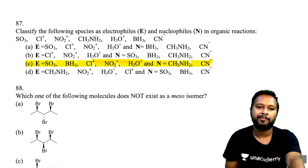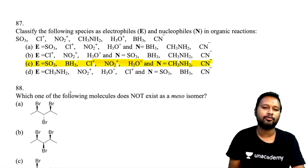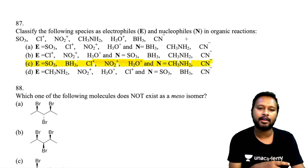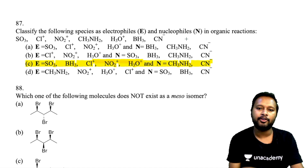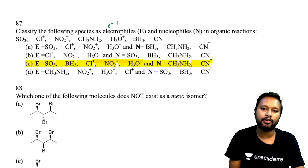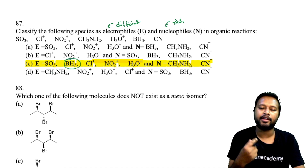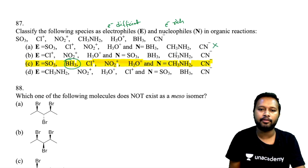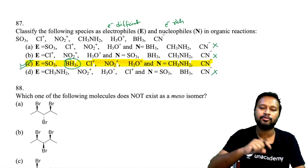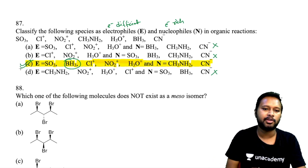Question 87 asks to classify species as electrophiles or nucleophiles. Electrophiles are electron-deficient and seek electron-rich centers; nucleophiles are electron-rich and seek electron-deficient centers. BH₃ does not have a complete octet, so it is an electrophile. Any option placing BH₃ in the nucleophilic category is wrong. Only option C correctly classifies BH₃ as electrophilic.